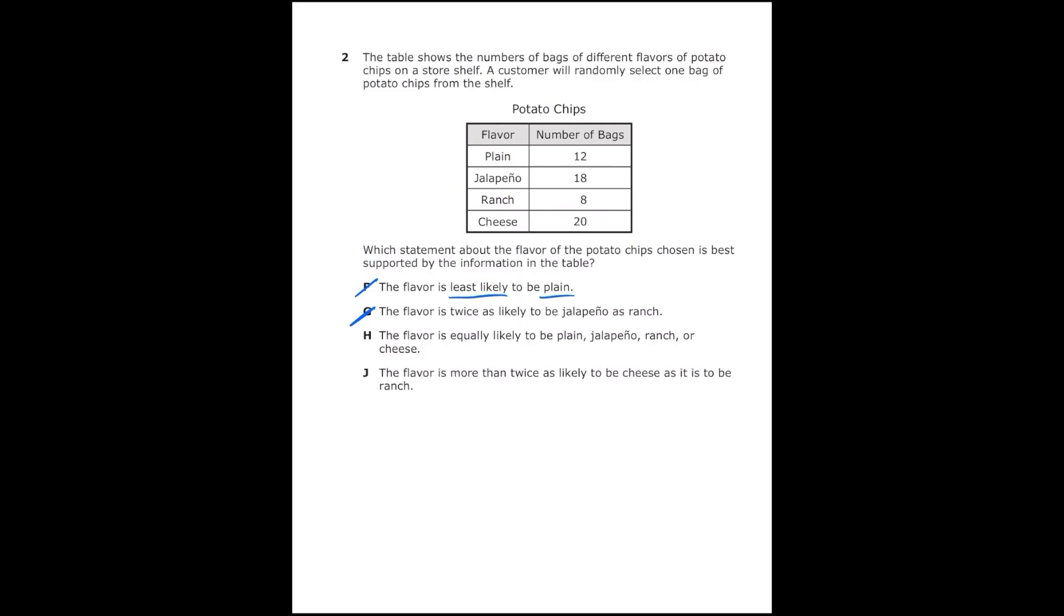Letter H says the flavor is equally likely to be plain, jalapeno, ranch, or cheese. That's not true because they're all different amounts. Letter J says the flavor is more than twice as likely to be cheese as ranch. Cheese is 20, ranch is 8. That is true because twice 8 is 16 and cheese is 20 which is more than 16. Our correct answer is letter J.